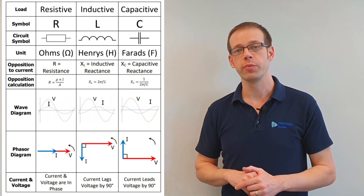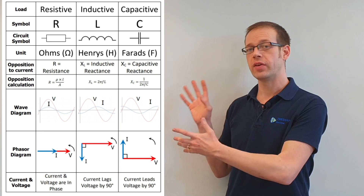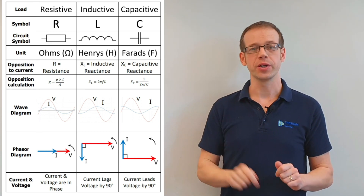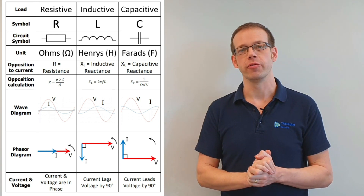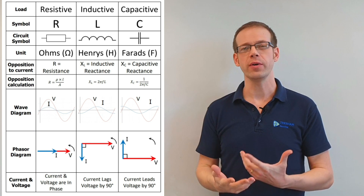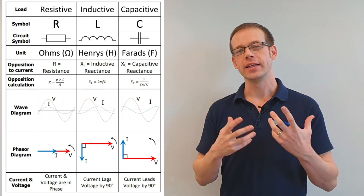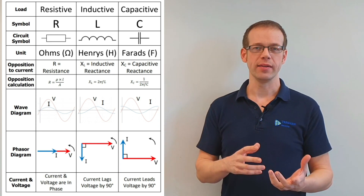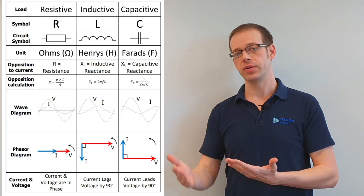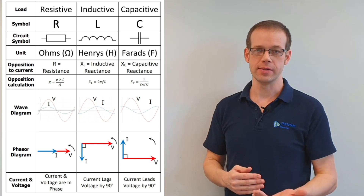Hopefully you now have a completed worksheet that looks like the one shown. If not, pause the video, download the worksheet, and fill it all in so you have this information on paper in front of you. In our next video we're going to discuss what happens when we connect different types of load together — resistors and inductors in series, resistors and capacitors in series, and those loads in parallel — and see how that affects the relationships between current and voltage. Thank you very much for watching.